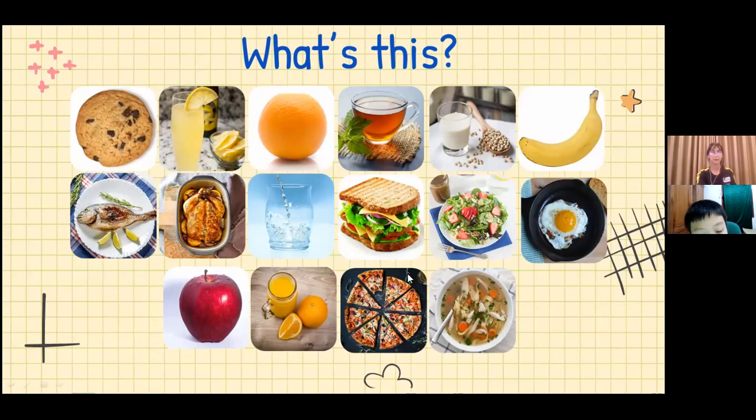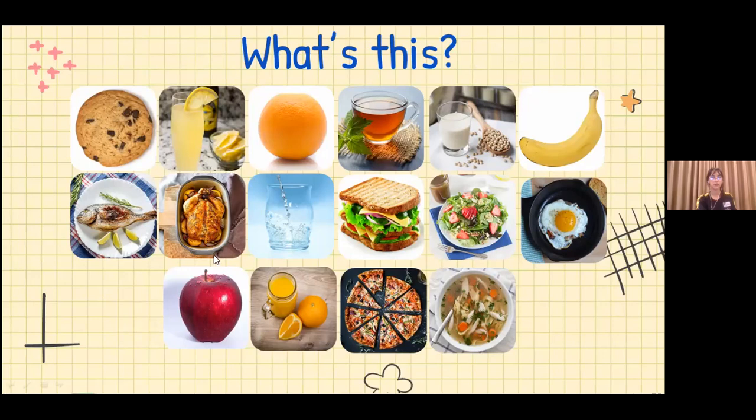It's a pizza. What drink is this? It's orange juice. What is this? It's an egg. Very good. What is this? It's a fish. And what is this? It's a lemonade. Lemonade.